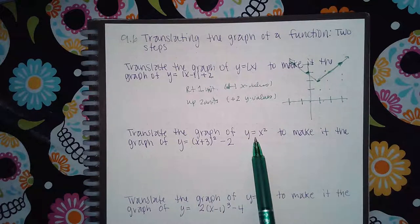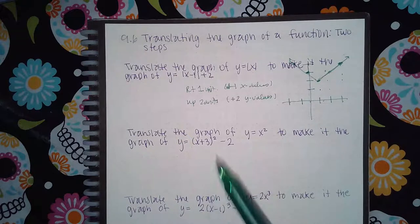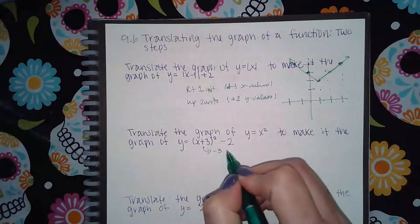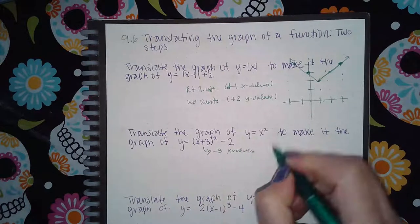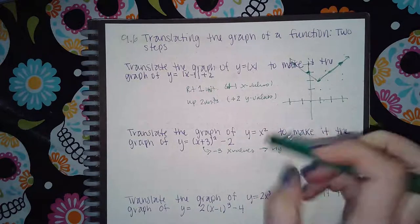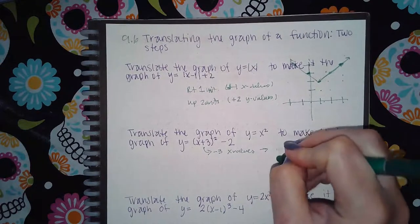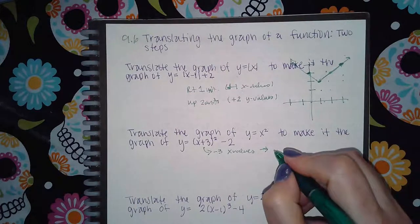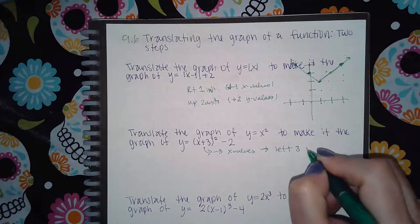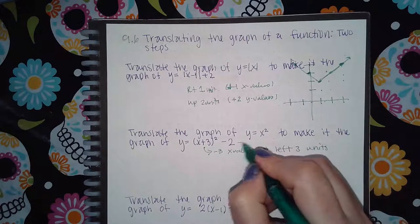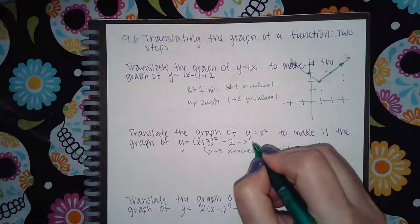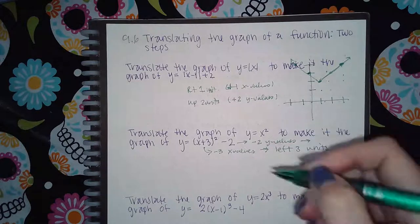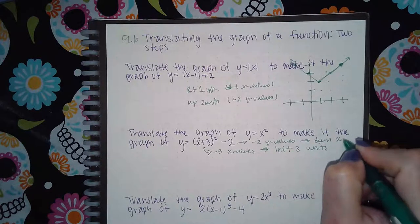Now it tells us to translate x² according to this transformation. The plus 3 inside means we do the opposite — minus 3 to the x values — which actually moves it to the left 3. Because if you minus 3 from the x values, they go left. And then, minus 2 on the outside of the square means minus 2 from the y values, which makes it go down 2 units.